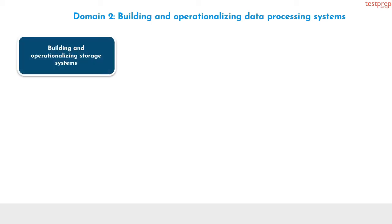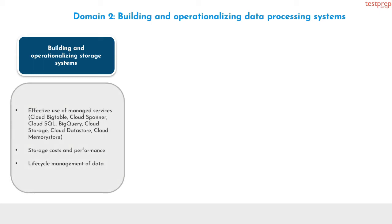Module 2, building and operationalizing data processing systems. Number 1, building and operationalizing storage systems. It contains 3 subtopics: first, effective use of managed services — Cloud Bigtable, Cloud Spanner, Cloud SQL, BigQuery, Cloud Storage, Cloud Datastore, Cloud Memorystore; second, storage costs and performance; third, lifecycle management of data.